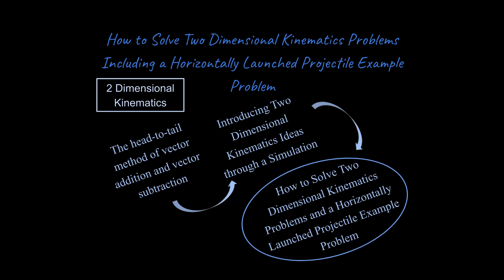I do want to recap where we have been. I've talked about the head-to-tail method of vector addition and vector subtraction. That's going to become important for our next lesson, which is how to do problems with a projectile that's launched at an angle. I did just do a lesson on introducing two-dimensional kinematics ideas through a simulation. So I'll put a link up to these things in the upper right as I talk. And this lesson is going to be about two-dimensional kinematic equations and a horizontally launched projectile example problem. So this is training for physics type classes about how you can think through and solve these problems successfully.